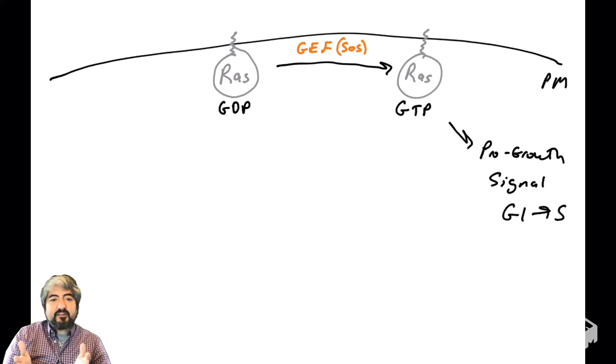Previously, we spoke about how RAS can exist bound to GDP or bound to GTP. When it's bound to GTP, that is the pro-growth version of RAS, the on version of RAS. It stimulates growth of the cell, sends signals into the nucleus through a signal transduction pathway to get the cell to go through the cell cycle.